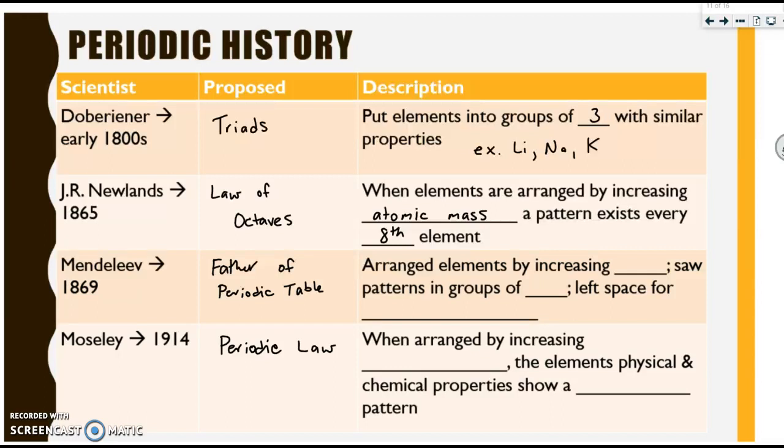A few years later, Dmitry Mendeleev, who has become known as the father of the periodic table, again, arranged elements by increasing atomic mass and saw patterns in groups of eight. So just like Newlands, his one major contribution was that he left some space on the table for elements that he knew he was missing. So again, more elements are being discovered, the periodic table is being used at this point, it's almost correct.